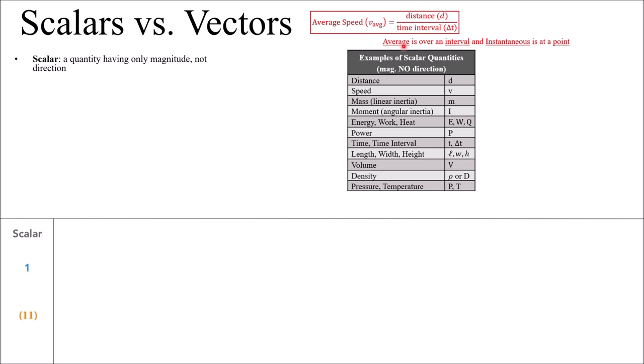Note that an average is over a time interval, whereas an instantaneous measurement is at a particular point in time. When we say average, we're talking about the entire interval.